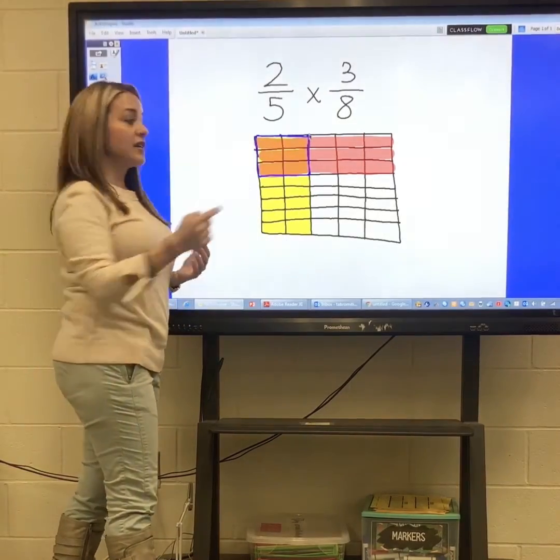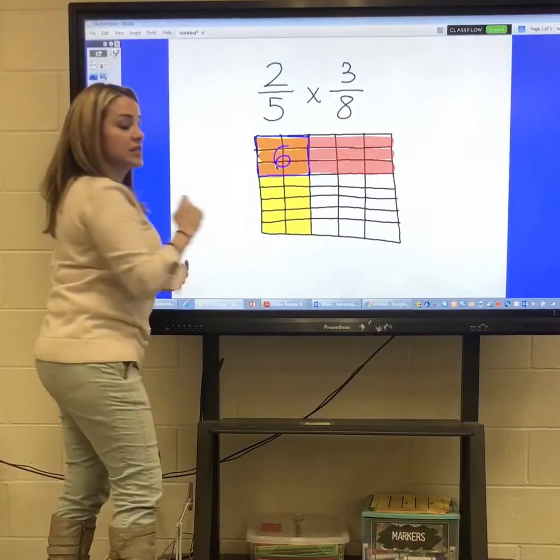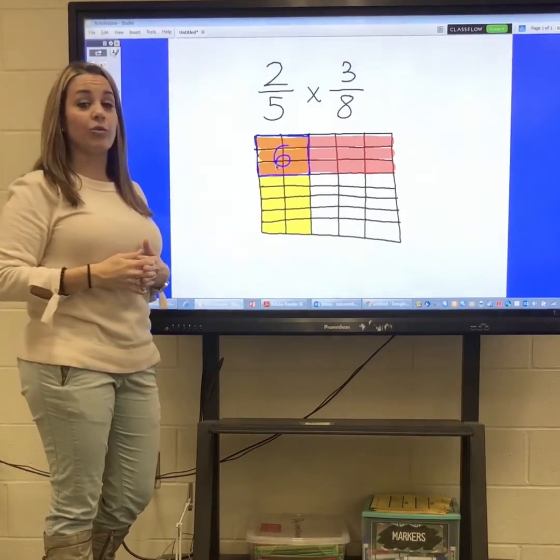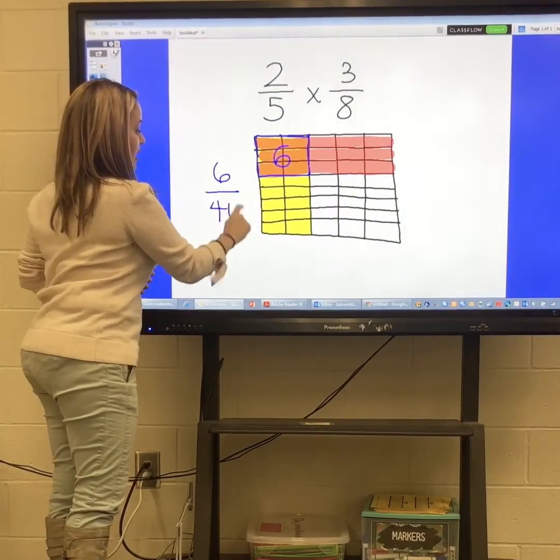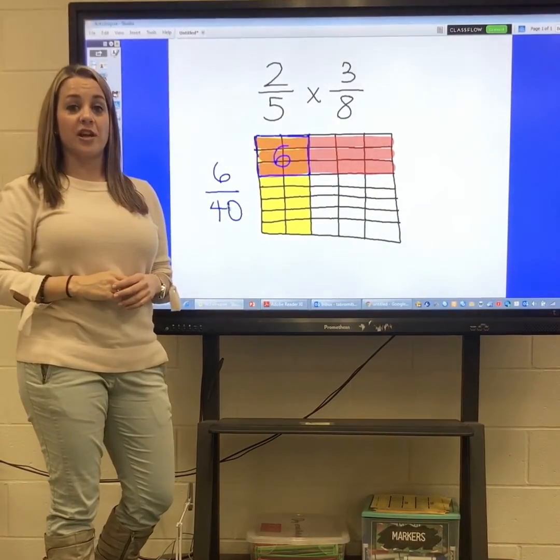So when you look at it, there are now 6 pieces out of a new whole, which is now out of 40. So there are 6 out of 40 pieces that are shaded in orange.